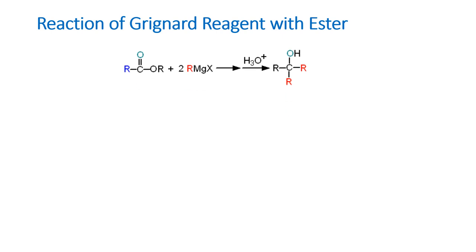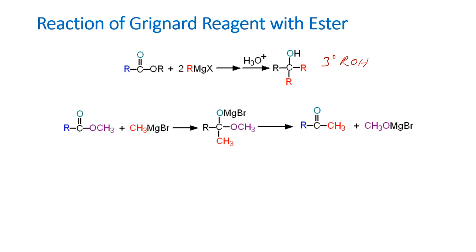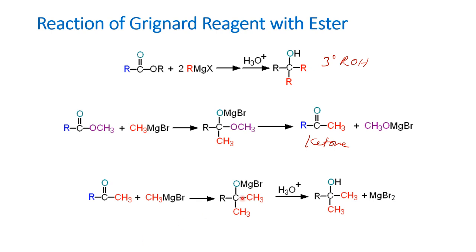When we are talking about esters, esters react with two molecules of Grignard reagent to form a tertiary alcohol. It is a two-step reaction: the ester reacts and forms a ketone first, and the ketone will react with another molecule of Grignard reagent to form the tertiary alcohol. In the case of an ester, the alkoxy group will leave in the first step, and in the second step the ketone that is formed reacts with the second molecule of Grignard reagent to form the tertiary alcohol.